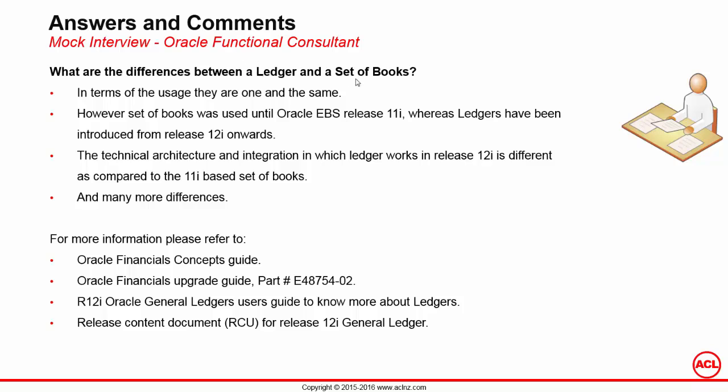The functionality of both is one and the same. In a set of books, you maintain your chart of accounts and your accounting entries — the same thing applies in a ledger. In a ledger, you maintain your chart of accounts and all your accounting entries from all the subledger applications, such as Accounts Payable, Accounts Receivable, Fixed Assets, Cash Management, and Projects.